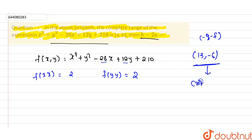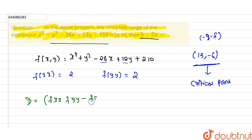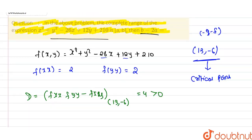Now D = f_xx · f_yy - (f_xy)² at the critical point (13, -6). This equals 4, which is greater than 0. And since f_xx > 0, f has a minimum value at this critical point.